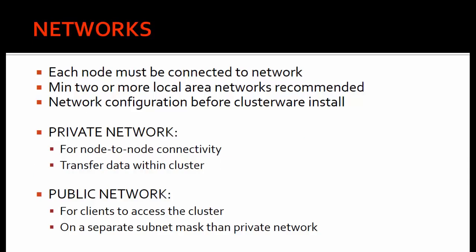Finally, the network component. Each node must be connected to a network — a minimum of two or more local area networks is recommended. Some clusters may require more than two, such as two private networks: one for internal node communication and another for shared storage communication. Oracle RAC needs only two networks: one public and one private. There are further networks to configure — virtual IP and SCAN IP — which we'll cover in the networking configuration section, along with SCAN listeners and local node listeners.